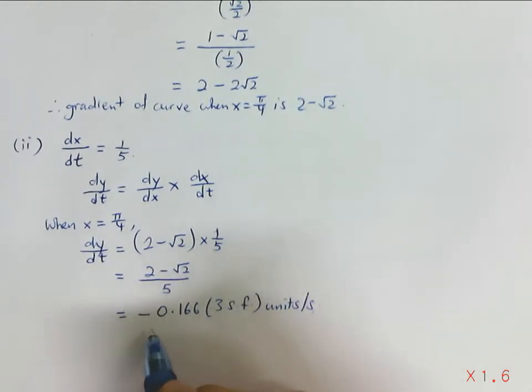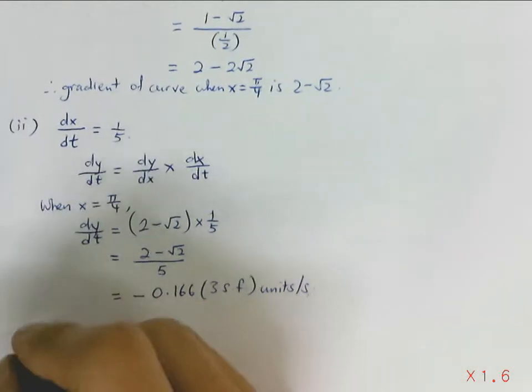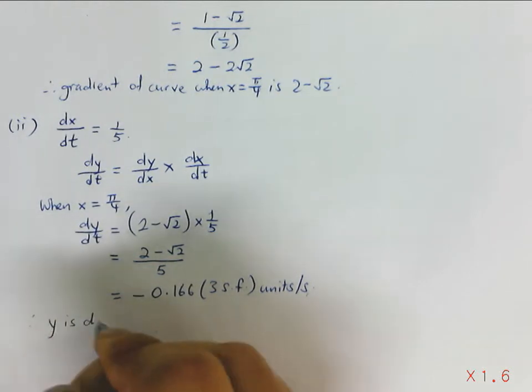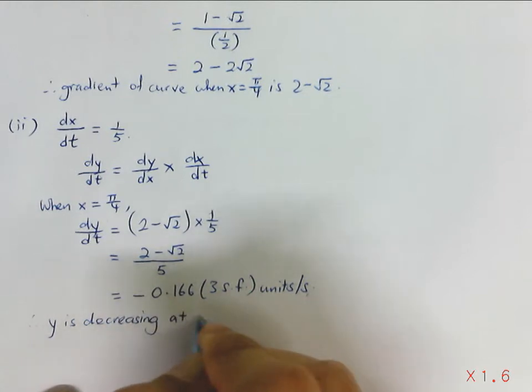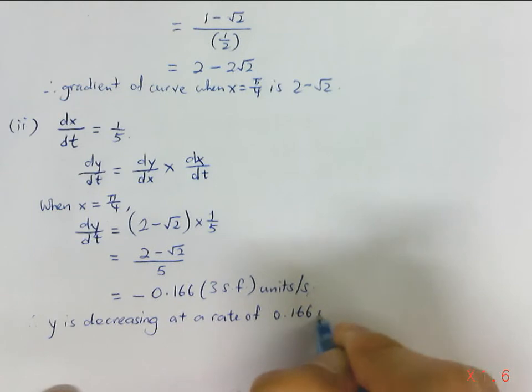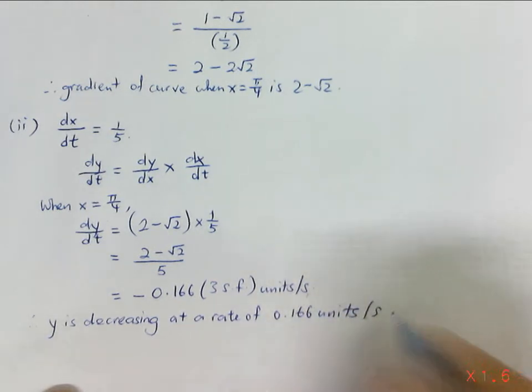Now notice that there's a negative sign in front, so you can also say that y is decreasing at a rate of 0.166 units per second.